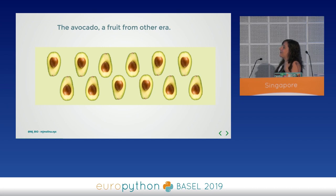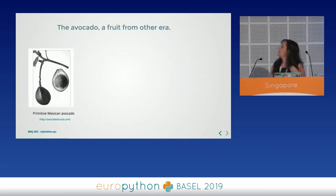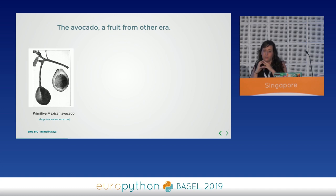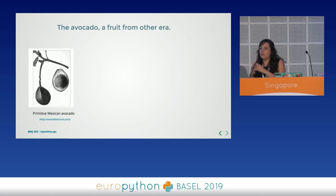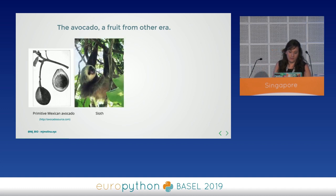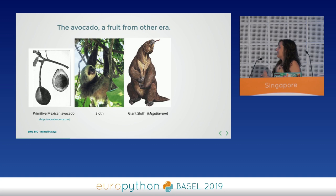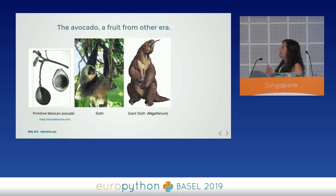My next story is about avocado, because avocado is a fruit from another era. This is what the primitive avocado looked like — the seed was huge, and this was a really problematic issue because seed dispersal was very difficult. But thanks to this animal — not this one, but its grand-grandparent, which was a giant sloth around four meters in size — that ate avocados, we have avocados nowadays.